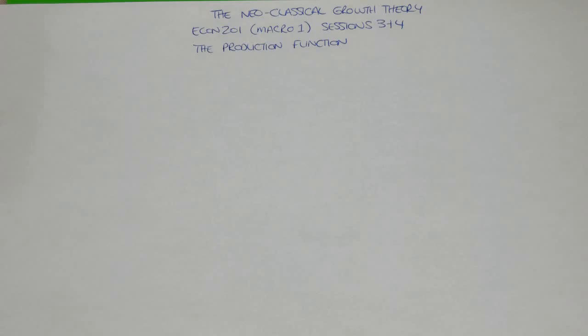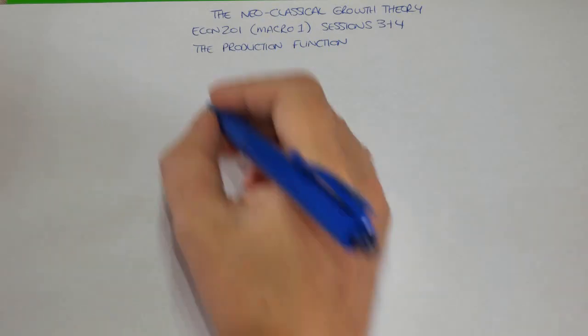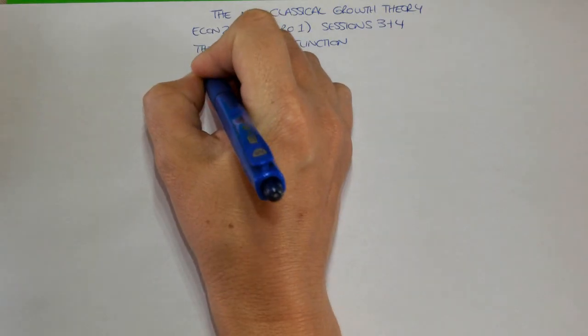You would have heard of the production function before. In economics, we use the production function because it allows us to establish a quantitative link between the amount of inputs that go into productive processes and the amount of output that you then get. So really it's just a relationship between what you put in and what you get out. We would have previously dealt with an aggregate production function, and we can write the aggregate production function as follows.